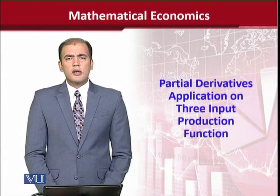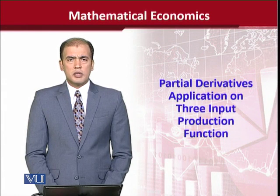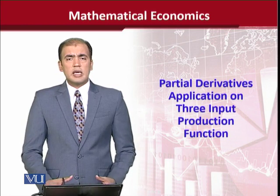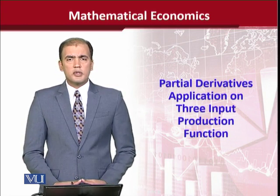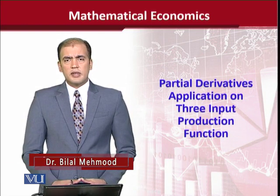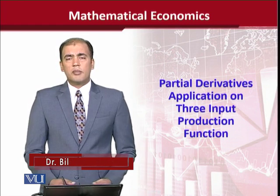Dear students, in economic theory, usually we deal with production functions that have two inputs, that is labor and capital. But this is not actually the case in real life. We can have more than two inputs in any production function. So how we can analyze it? And definitely by using the partial derivatives, what will be the implications?